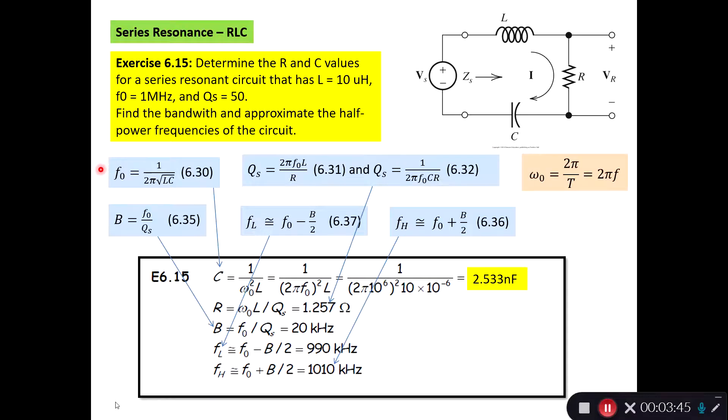We have the resonance equation. We have the quality factors for the series resonance above. We also know that omega zero is the specific frequency for the circuit, so 2π over the time period, or 2π times f.